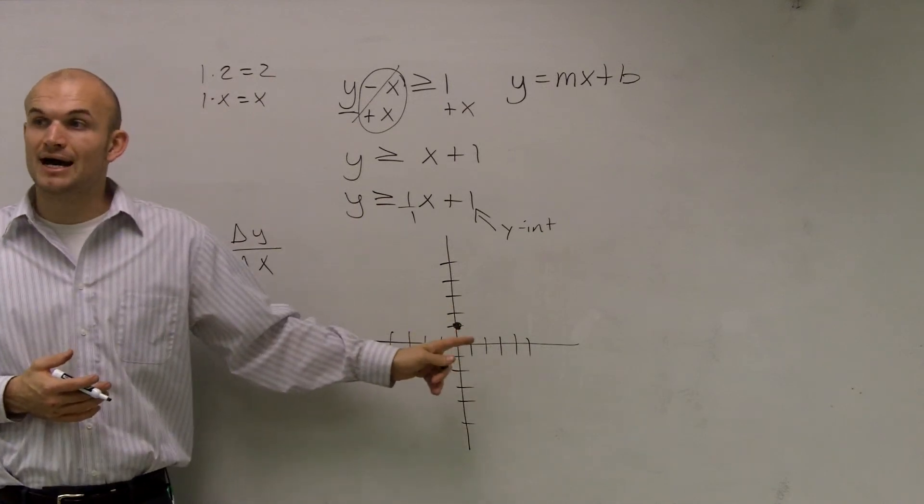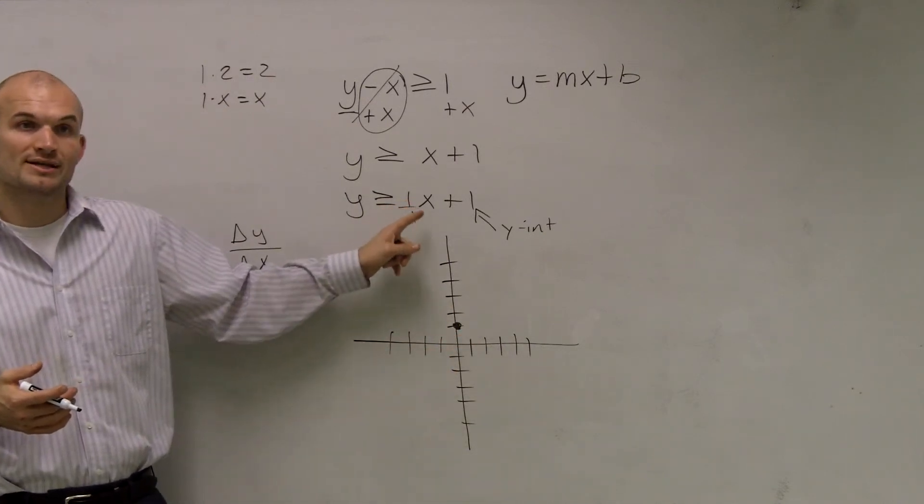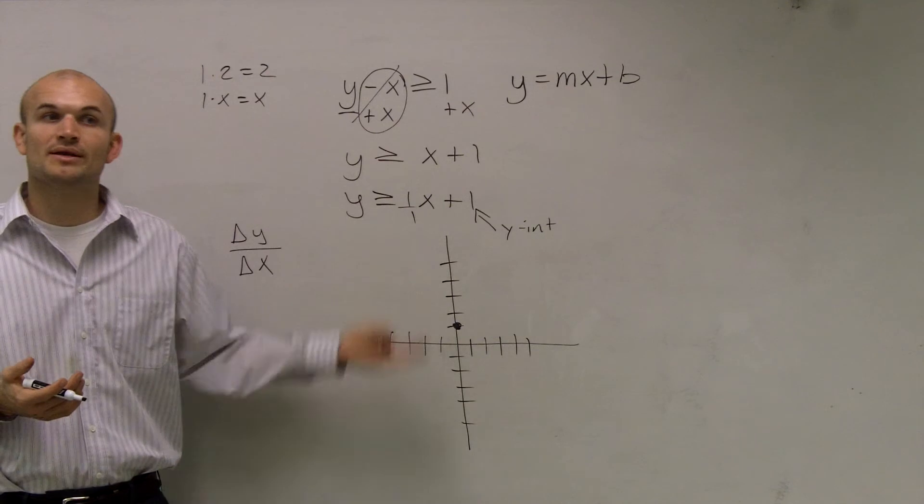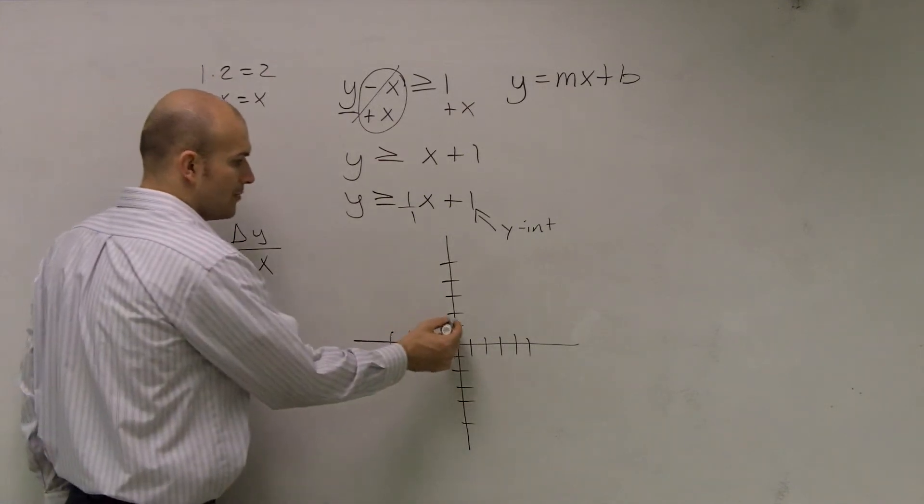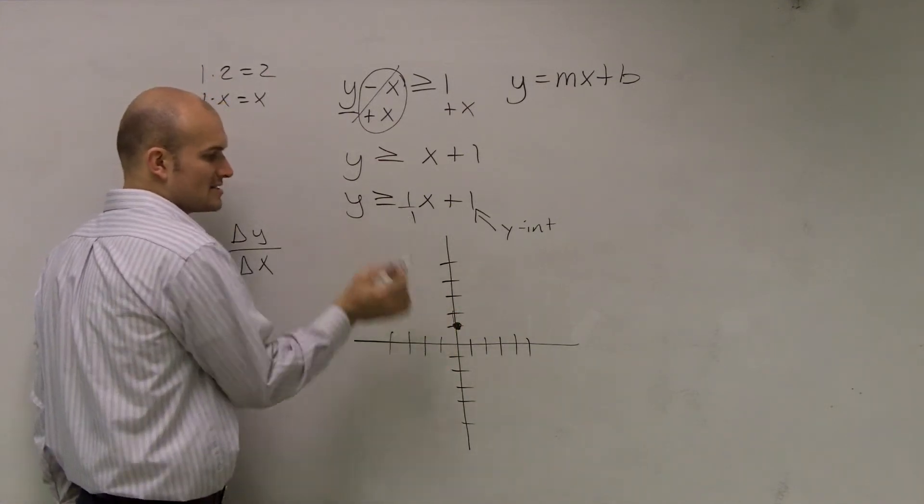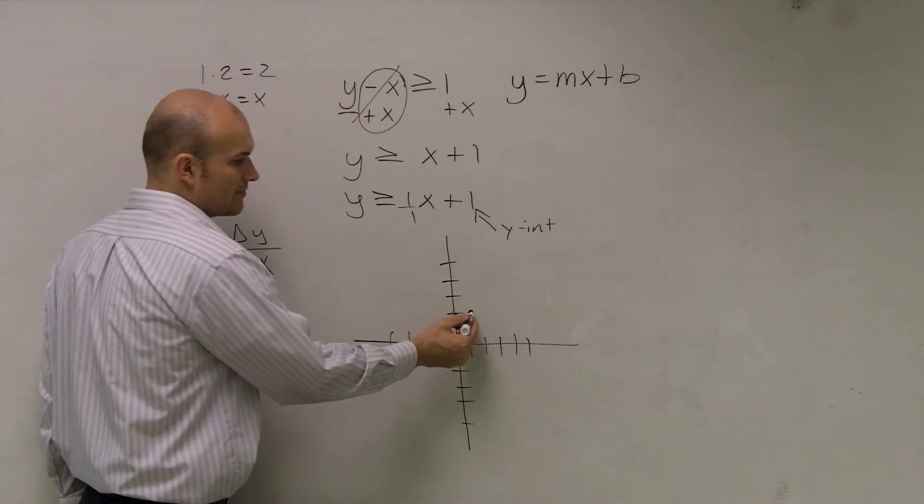Meaning, to find my next point on my line, the change in the y coordinates are positive 1. So does that mean I'm going to go up or down? Well, since it's positive, I'm going to go up 1. Then, the change in my x is a positive 1. So I'm going to go to the right 1.